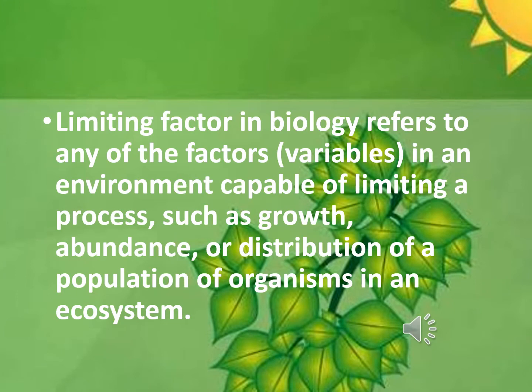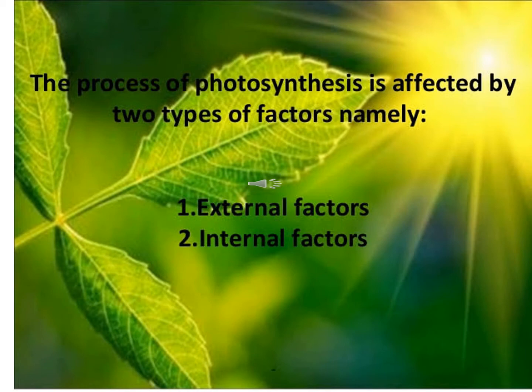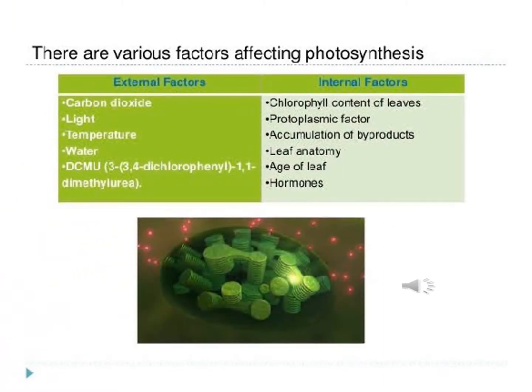In biology, a limiting factor refers to any of the physiological variables — like light, temperature, and carbon dioxide — in an environment capable of limiting a process such as growth, abundance, or distribution of a population of organisms in an ecosystem. The process of photosynthesis is affected by two types of factors: external factors and internal factors. External factors are carbon dioxide, light, temperature, and water. Internal factors are chlorophyll content of leaves, accumulation of byproducts, leaf anatomy, age of leaf, hormones, etc. In your book, just the external factors are mentioned, so we are going to discuss those in detail.